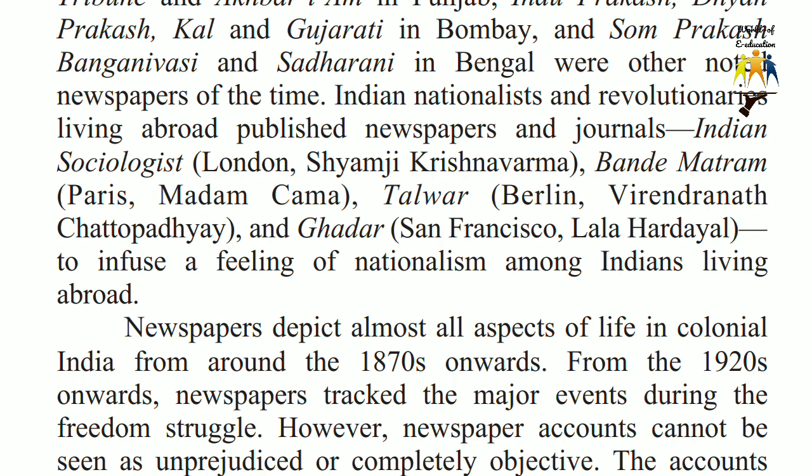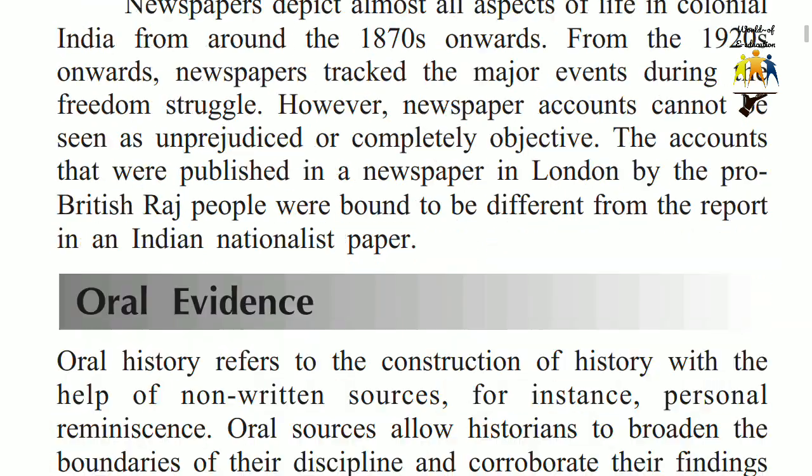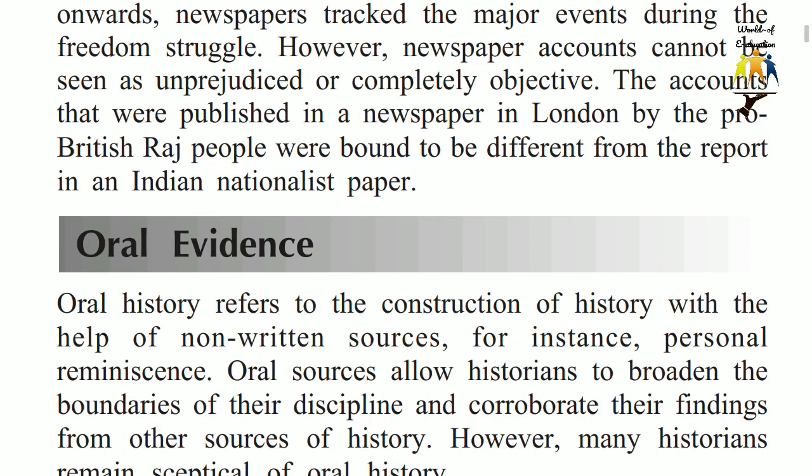Newspapers depict almost all aspects of life in colonial India from around the 1870s onwards. From the 1920s onwards, newspapers track the major events during the freedom struggle. However, newspaper accounts cannot be seen as unprejudiced or completely objective. The accounts published in a newspaper in London by pro-British Raj people were bound to be different from the report in an Indian nationalist paper.